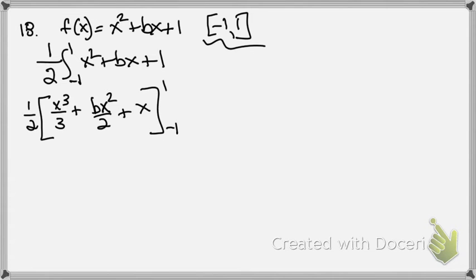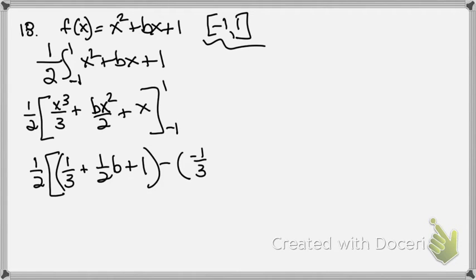Evaluate it from negative 1 to 1. I'm now going to plug in the 1 and the negative 1 and see what the heck I get. I've got no idea where I'm going with this. Plugging in the 1, I get 1 third plus 1 half b plus 1. Plugging in the negative 1, I get negative 1 third plus 1 half b minus 1.